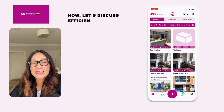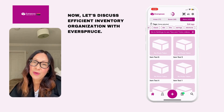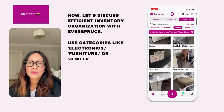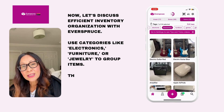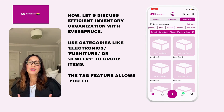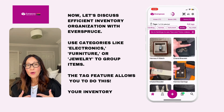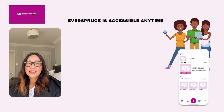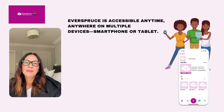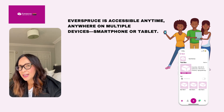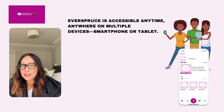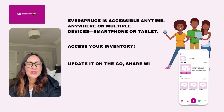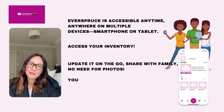Now let's discuss efficient inventory organization with Everspruce. Use categories like electronics, furniture, or jewelry to group items — the tag feature allows you to do this, making your inventory truly customizable. Everspruce is accessible anytime, anywhere on multiple devices — smartphone or tablet. Access your inventory, update it on the go, and share with family. No need for photos.